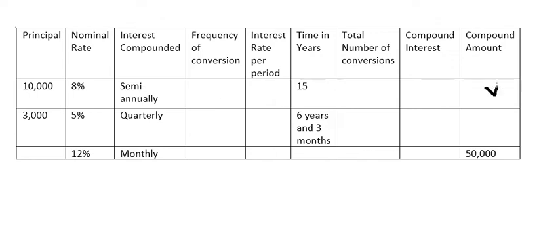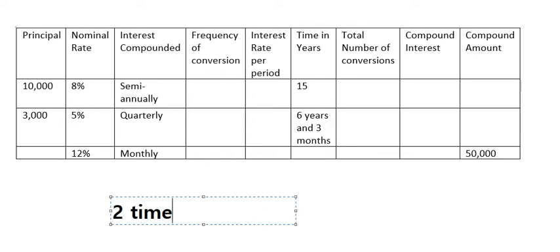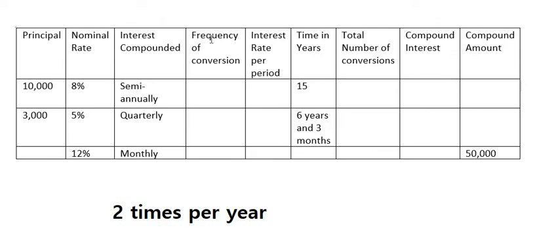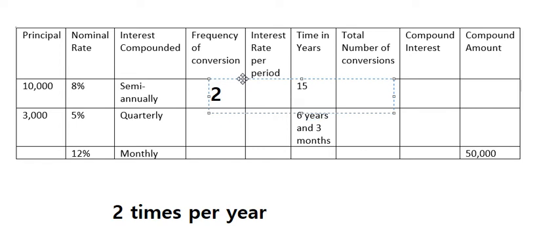For the first one, frequency of conversions: we know that semi-annually means they appear two times per year. So the frequency of conversions is number two.